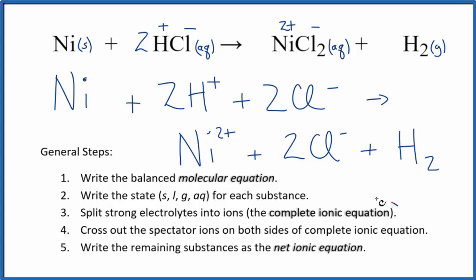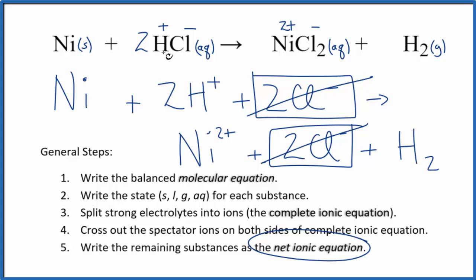At this point we have what's called the complete ionic equation. We can cross out spectator ions. They're on both sides. So as we look at this, the only thing that's the same on both sides - here in the reactants we have two chloride ions and in the products. So we can cross these out. These are our spectator ions. So once we do that we have the net ionic equation for Ni plus HCl.